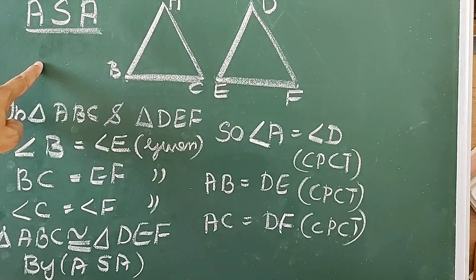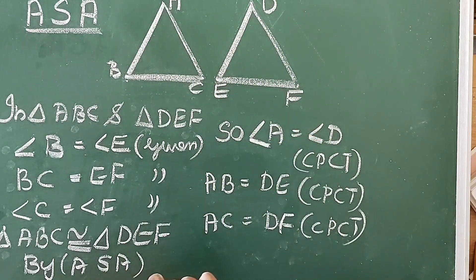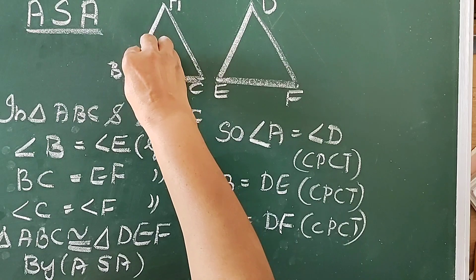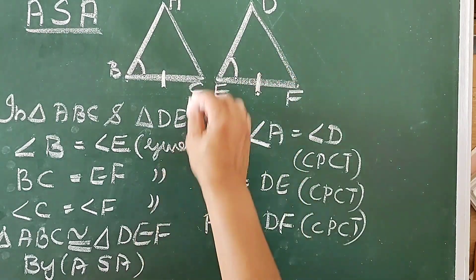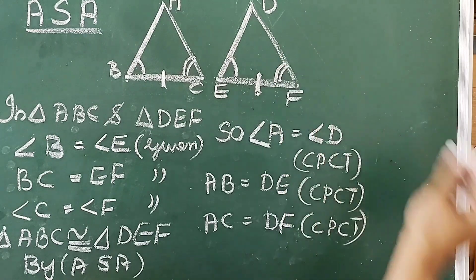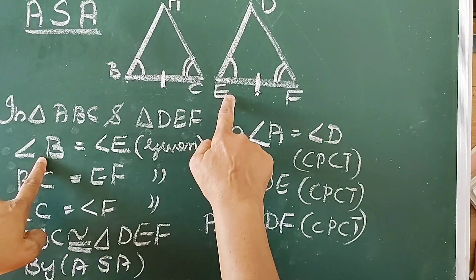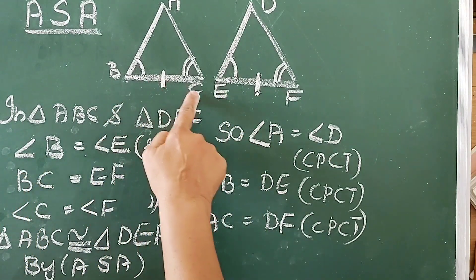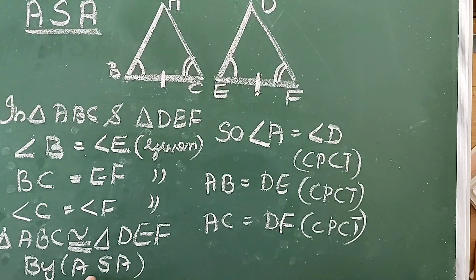Let us discuss the condition using two triangles. Triangle ABC and triangle DEF. It is given: angle B equal to angle E, side BC equal to side EF, angle C equal to angle F. From the figure: angle B equal to angle E — given; BC equal to EF — given; angle C equal to angle F — given.